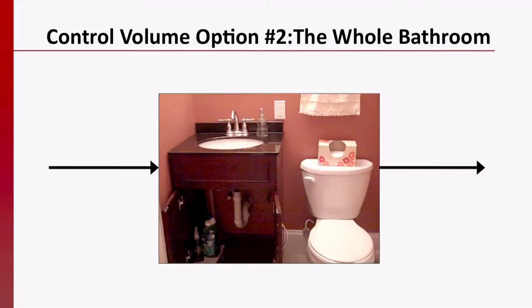What if we define the whole bathroom as our control volume? We could look at the flow going through all of the plumbing in the bathroom. Would this give us enough information to figure out how much water is accumulating in our basin? Yes, but we'd also have a lot of information to deal with. This probably wouldn't be the most efficient way to solve the problem.